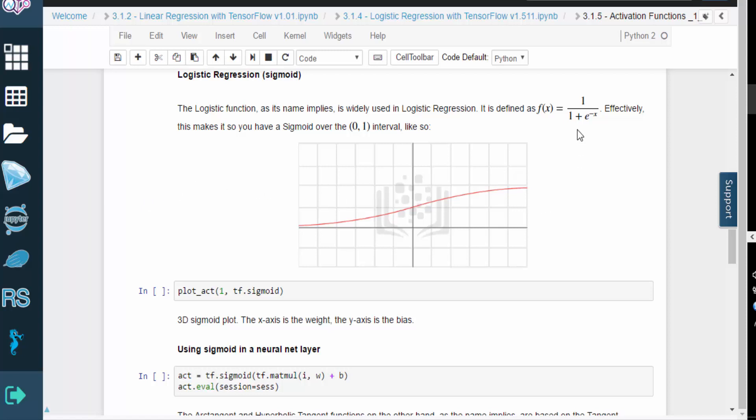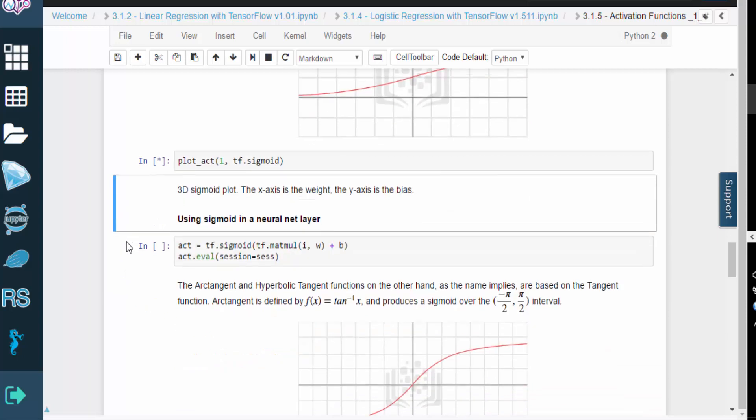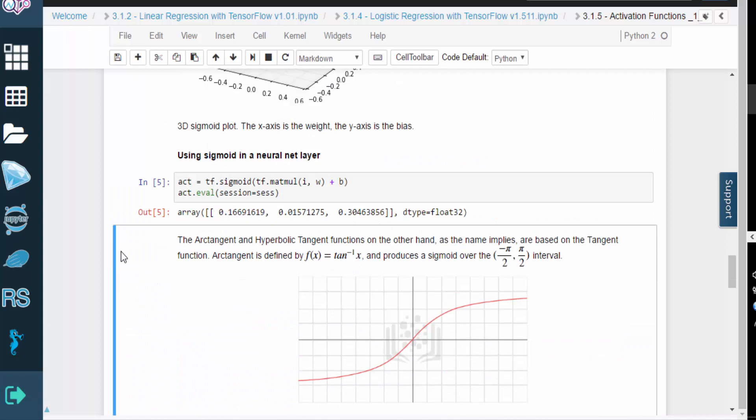As you'd expect, the logistic function is widely used in logistic regression. You can take a look at its definition here. This function maps the input into the open interval from 0 to 1, like so.